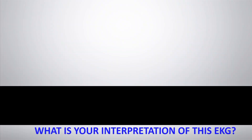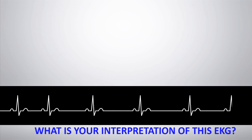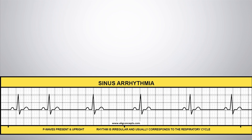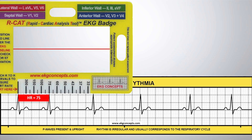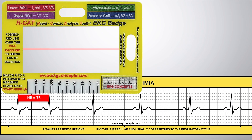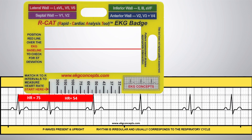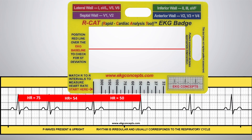What is your interpretation of this EKG rhythm strip? Sinus arrhythmia. Using the EKG badge to accurately and quickly confirm, match the R to R intervals to measure the heart rate. The heart rate is irregular.